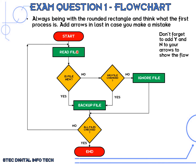Once the file has been read, we need to check a couple of things. First: is the file new? If the file is new, then we continue on to back up the file. When we put our decision boxes in, we need two arrows coming from the decision — one going down and one going to the left or right. If the file is not new — it's an old file — we check if the file has changed since last time. If it has changed, we back up the file. If it hasn't changed, we ignore the file.